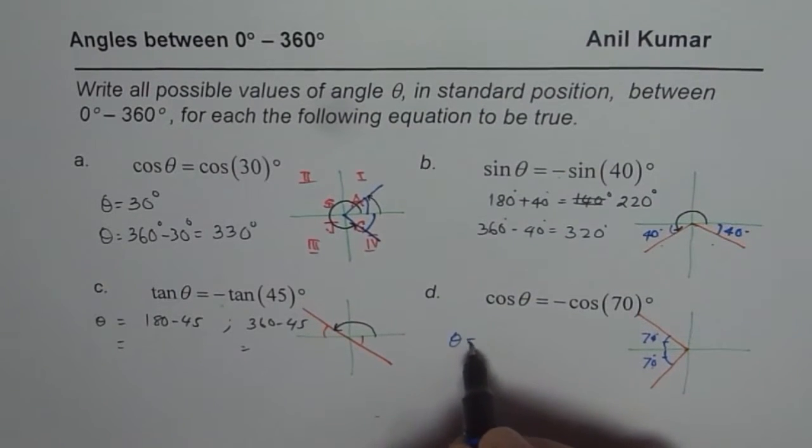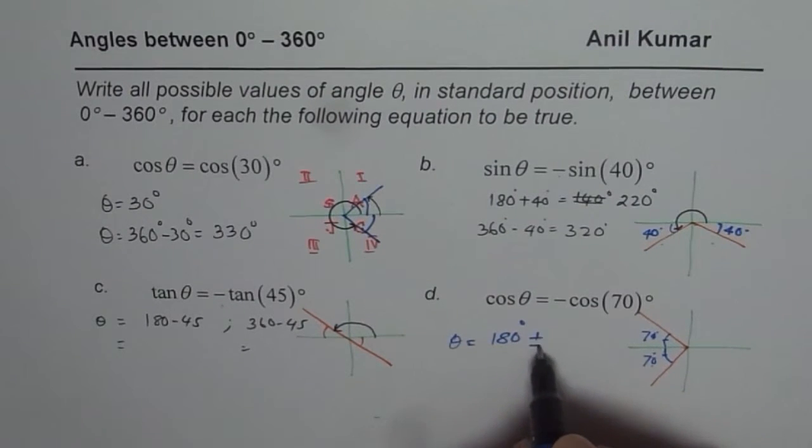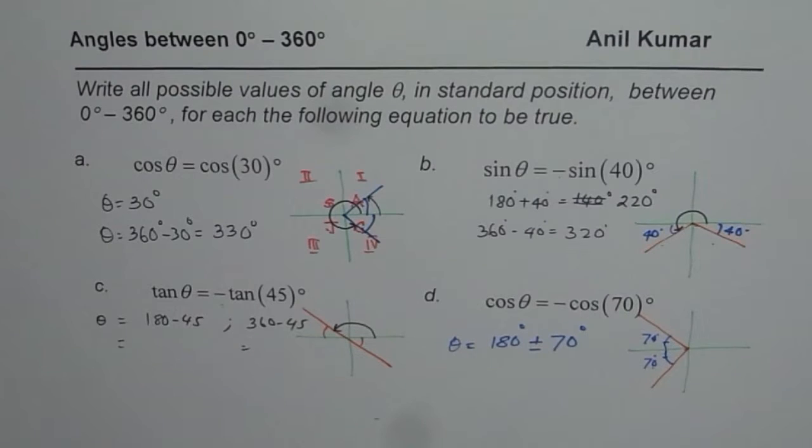So, cos is negative in these two coordinates. So, the answer for theta is how much? It is 180 degrees plus minus. So, you get two angles, 70 degrees. So, that is how you can find all the angles within 0 to 360, which will give you the same result as we are looking for.